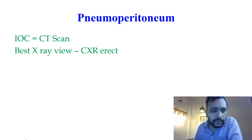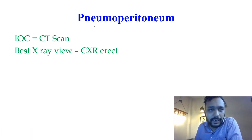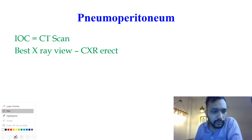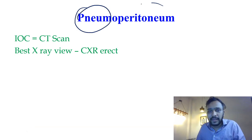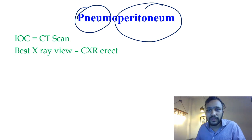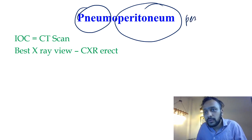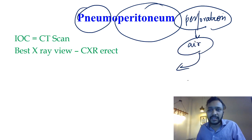Today we are going to discuss what is pneumoperitoneum. 'Pneumo' means air and 'peritoneum' means peritoneal cavity. In pneumoperitoneum, air will collect within the peritoneal cavity. This air comes from rupture or perforation of the bowel loops — either due to obstruction or any other cause — resulting in collection of air within the peritoneal cavity.